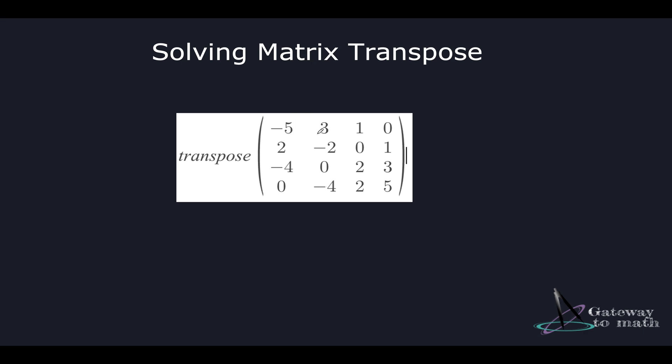We're given a matrix here which is minus five three one zero, two minus two zero one, minus four zero two three, zero minus four two and five respectively. And we need to find the transpose of this matrix.